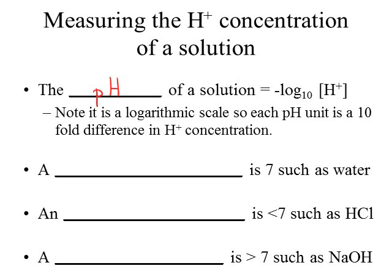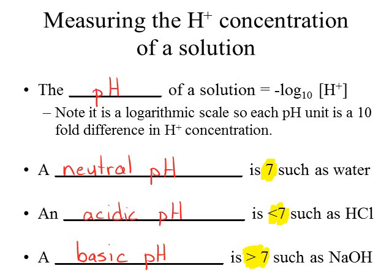If you're working with something that has a pH of 7, such as water, we refer to this as a neutral solution. As the pH decreases below 7, the solution is becoming more acidic, so a pH less than 7 is an acidic pH. Conversely, a solution with a pH greater than 7 is a basic pH. So we have neutral at pH 7, acidic below 7, and basic above 7.